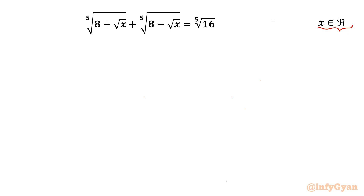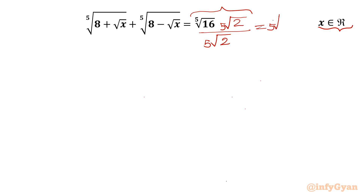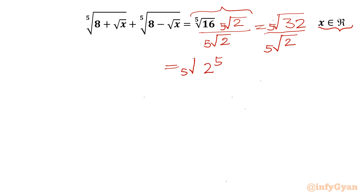Let us get started with our algebraic manipulation step. I will multiply the RHS with 5th root of 2 in the numerator, and also multiply in the denominator by the same. From the RHS numerator, I can write this as 5th root of 16 times 2, so 32 divided by 5th root of 2. I can write our RHS as 5th root of 32, which is 2 to the power 5, divided by 5th root of 2.